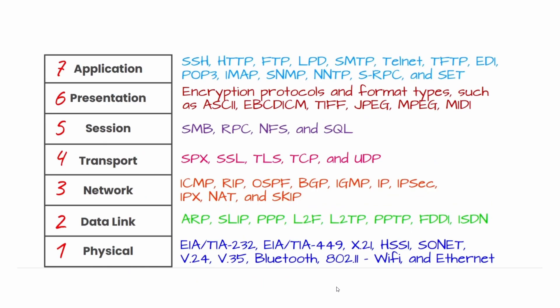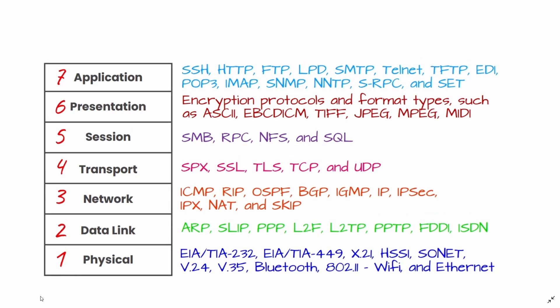A multitude of protocols exists at the TCP/IP application layer, which combines the session, presentation, and application layers of the OSI model. The OSI model, or the Open Systems Interconnection Model, is a conceptual framework used to describe the functions of a networking system. The OSI model characterizes computing functions into a universal set of rules and requirements in order to support interoperability between different products and software.